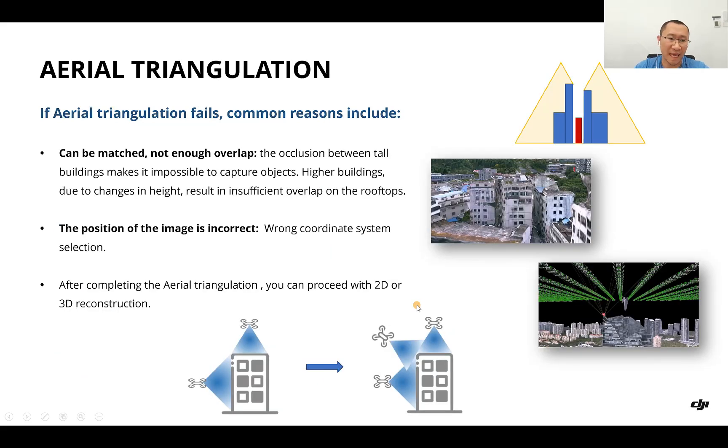Another issue is tie points can be matched but there's not enough overlap, or collision between tall buildings makes it impossible to capture the objects. For example, if there are higher buildings, due to height changes it results in insufficient overlap in the rooftop. There's another problem that might be caused by wrong coordinate system selection.